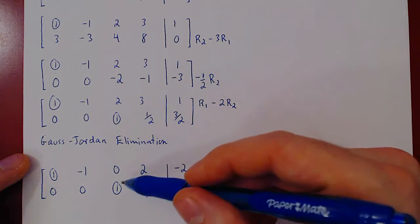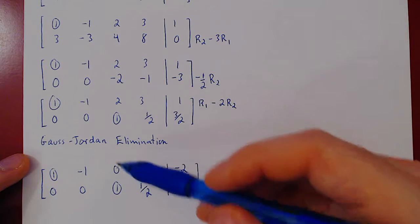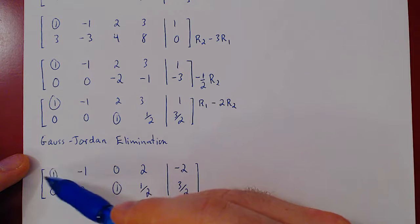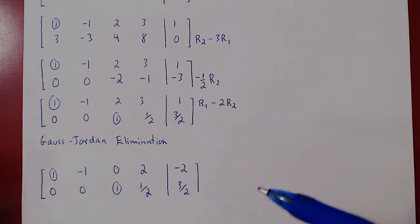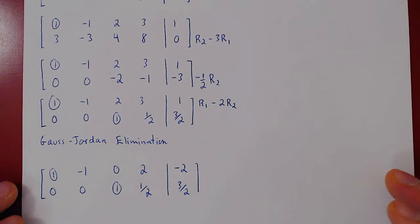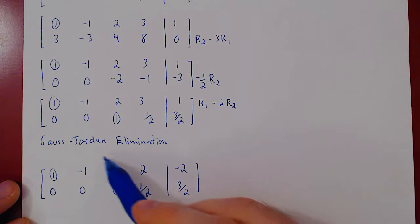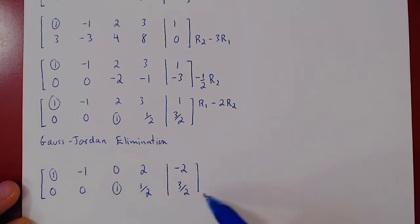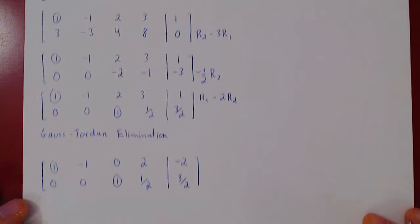So every entry above this leading one is 0. We move to the next leading one. There's nothing above it, and so we're done with Gauss-Jordan elimination. As the matrix now is in reduced echelon form, we can write the final solution set quite easily, and it will already be in simplified form.